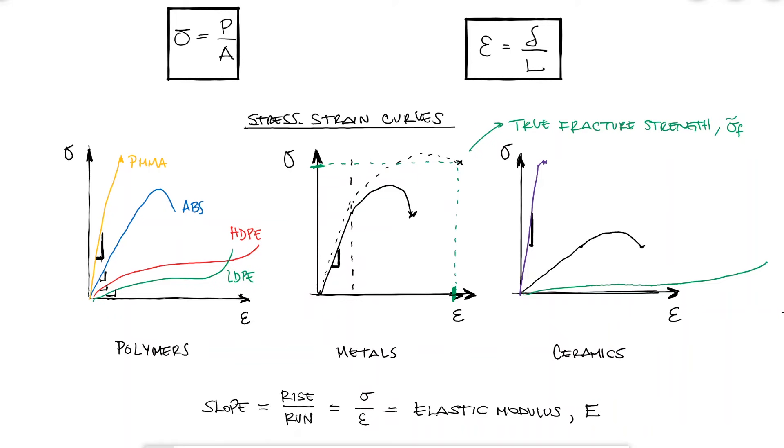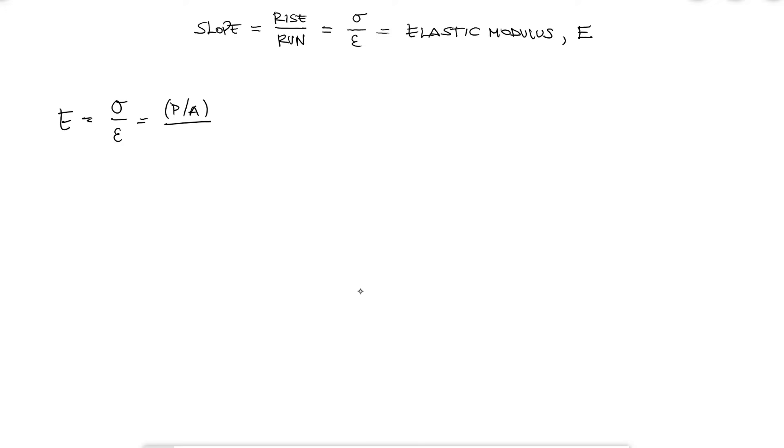Now, going back to the elastic modulus and using the expressions that I have for stress and strain, I would find that the elastic modulus is equal to PL over A delta, or if I'm solving for that delta, that the displacement or deflection is equal to PL over AE.